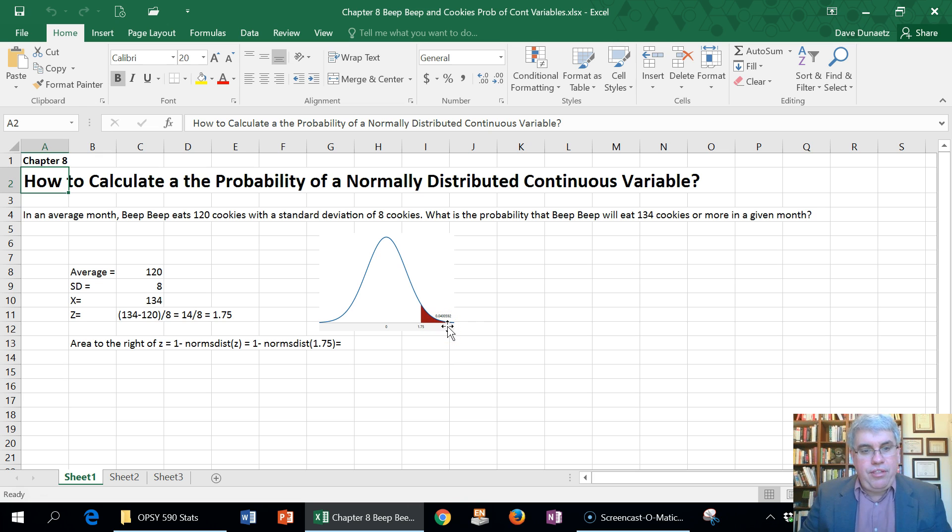And the way that we're going to do that is we're going to calculate a Z score, and then we're going to use our norm S distribution in Excel, which gives us the area to the left. And then we can subtract that from one to get the area to the right. So we know that the mean is 120, the standard deviation is 8, and the X that we're interested in, where the line is, this cutoff line that we're going to make, is 134.